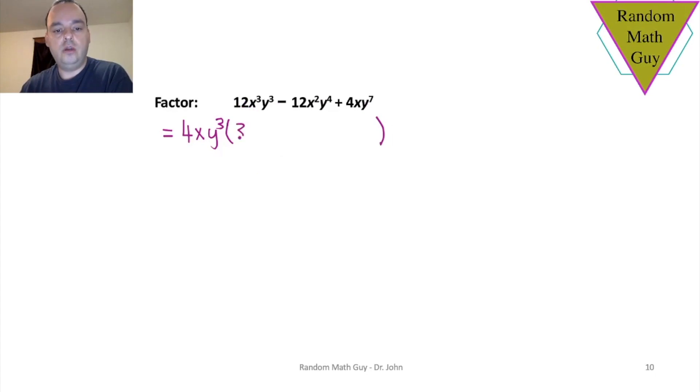12 divided by 4 is 3. x to the 3 divided by x is x to the 2. And we took out all the y cubes so they're gone. 12 divided by 4 is 3. I just wrote the negative sign ahead of time. x squared divided by x is x. And y to the 4 divided by y to the 3 is just a y. Finally I took out the 4, I took out the x, but I didn't take out all the y's. I took out 3 of the y's. I still have to put 4 of them over here. And that is the factored form for this expression.